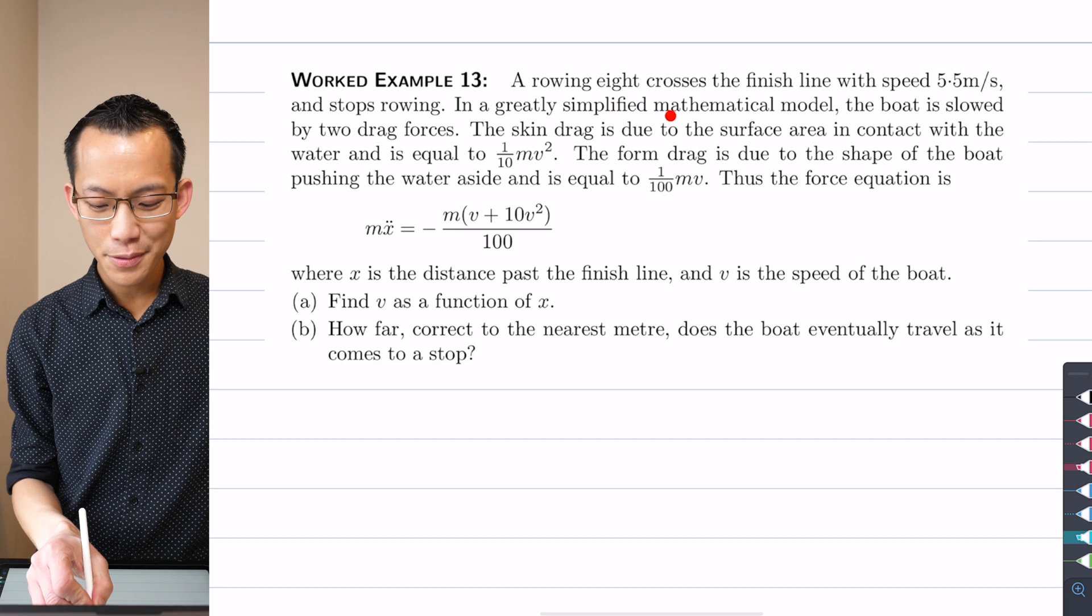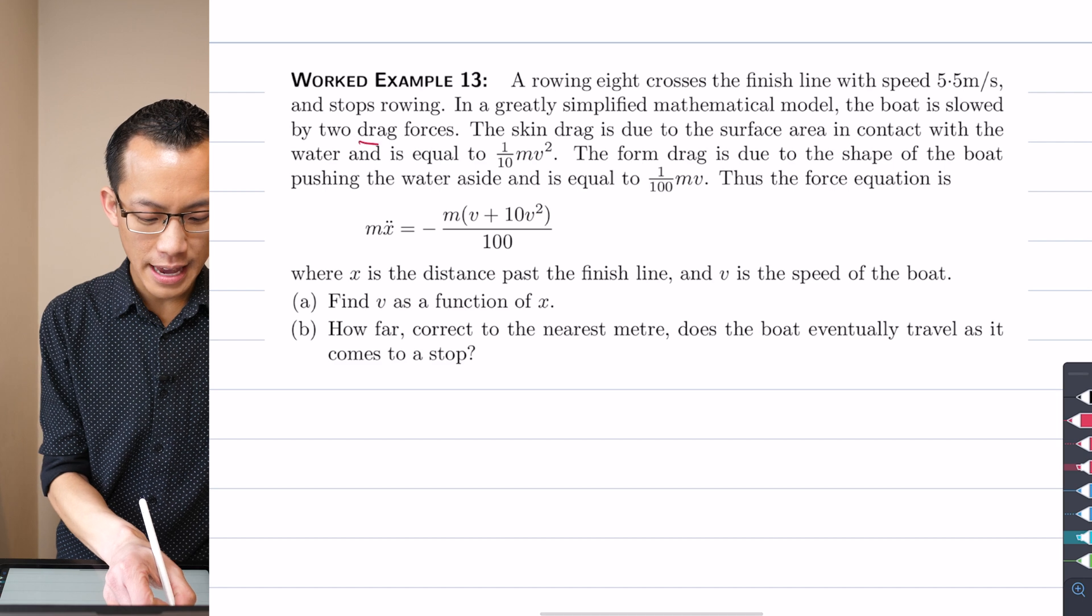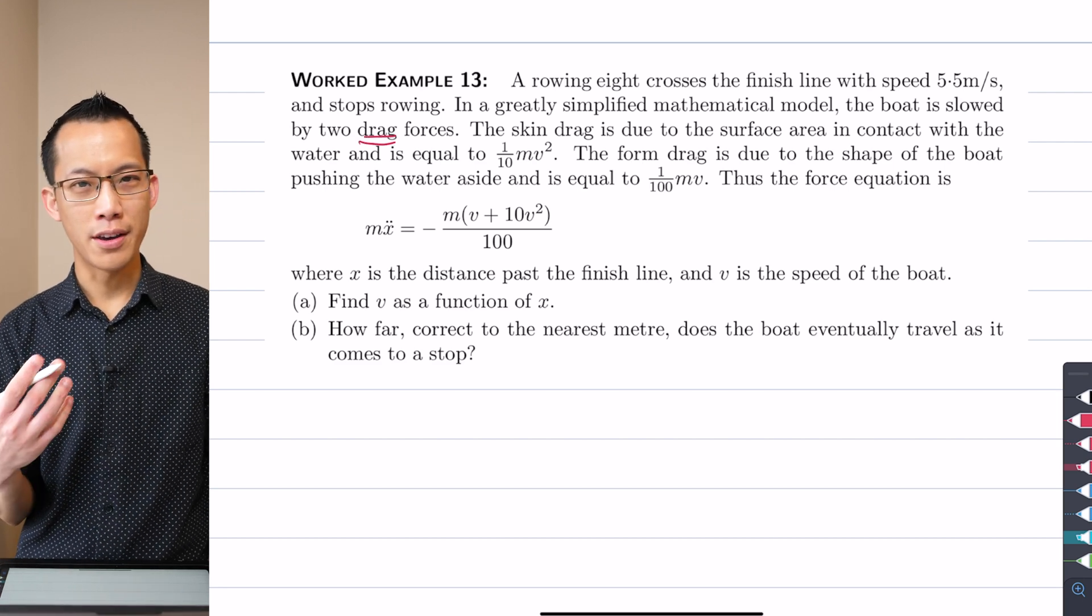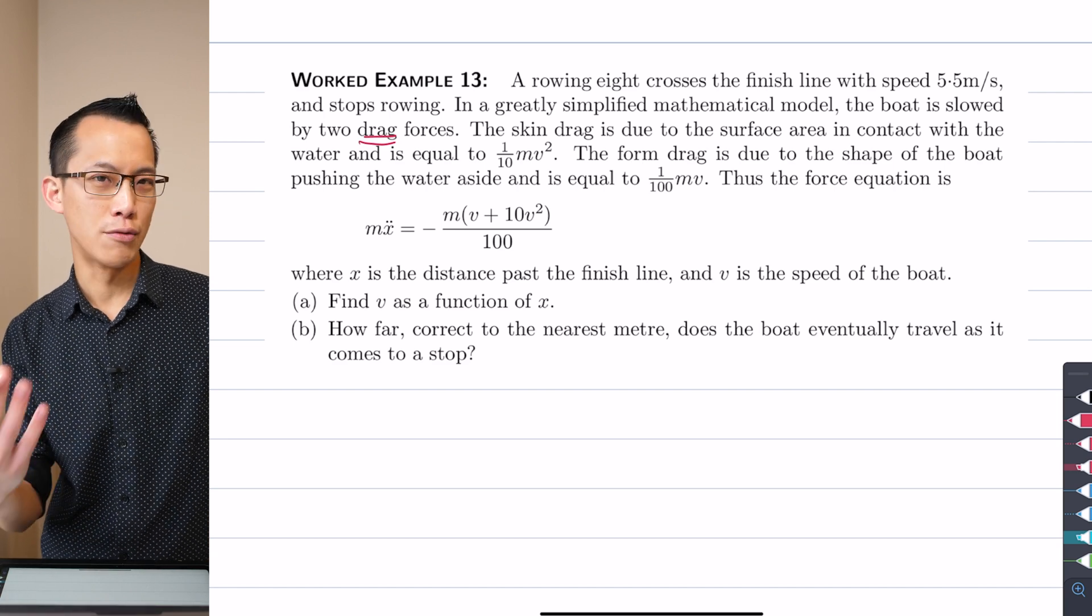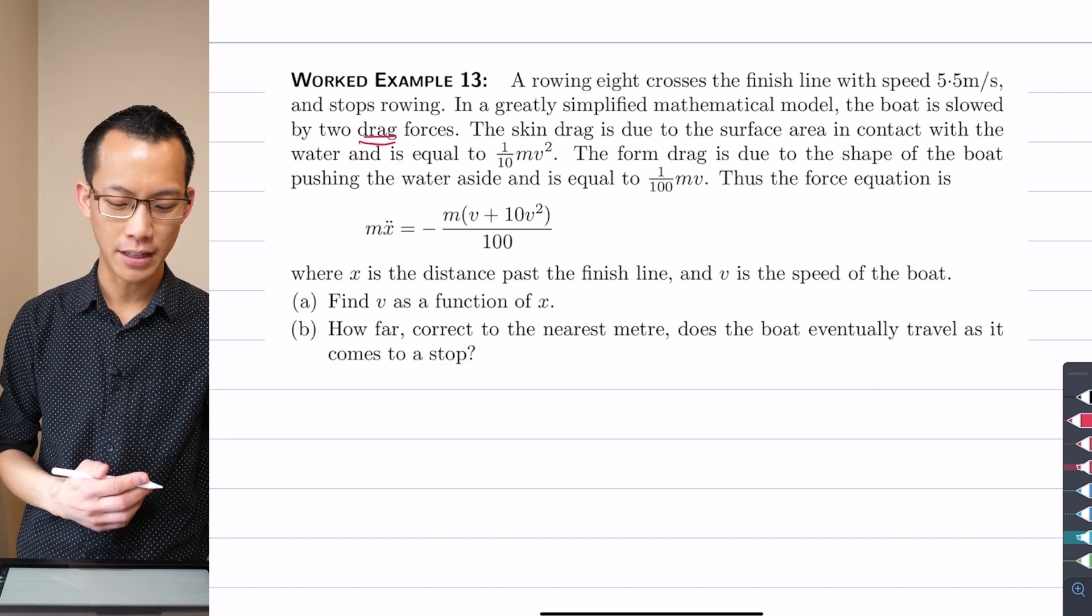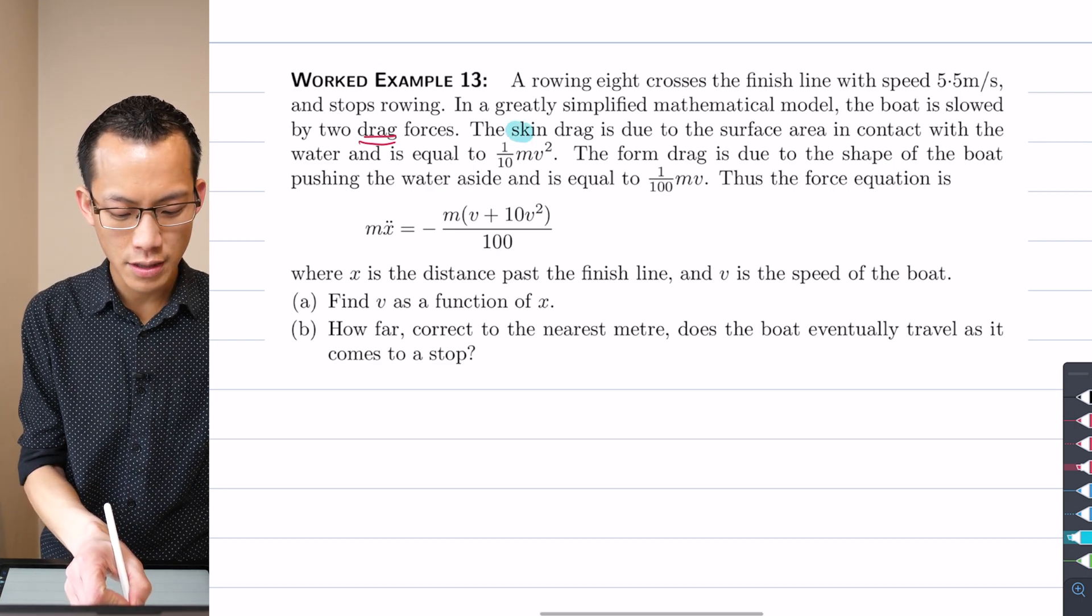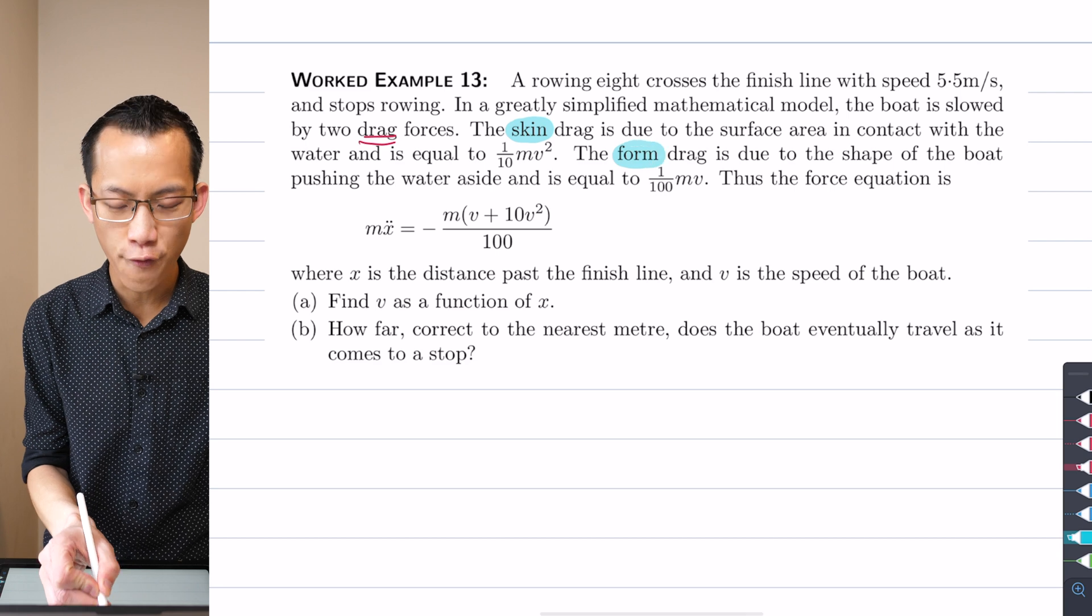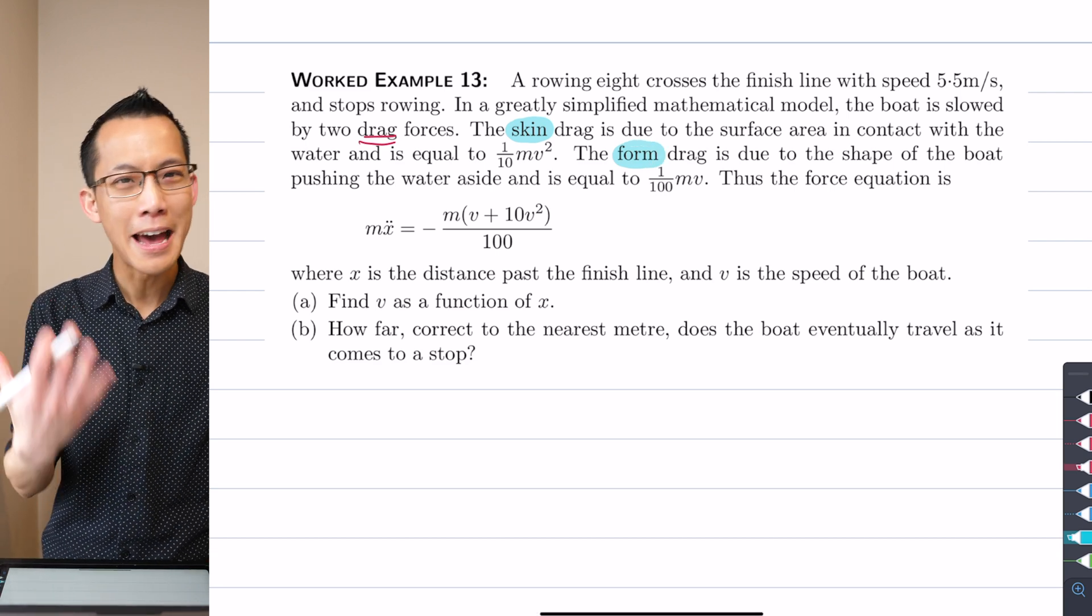So here's the situation. Like I mentioned before with swimming, the water that this boat is traveling through is resisting their motion, and that's why they have to row hard to go against it. In a greatly simplified mathematical model, the boat is slowed by two drag forces. So when they say drag, this is kind of one of the aerodynamic words, the physics words that indicates to us there is this resistance coming back from the medium they're traveling through. And then it highlights two things, skin drag and form drag.